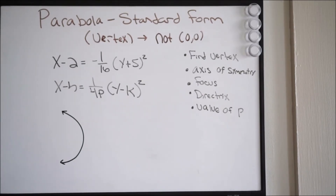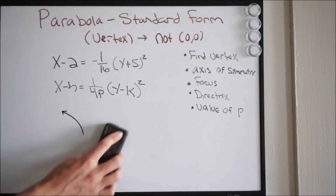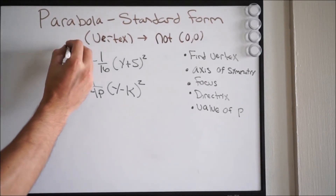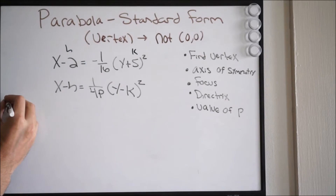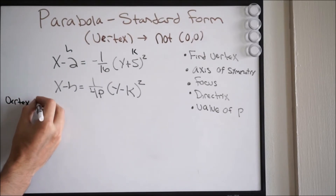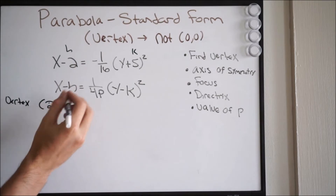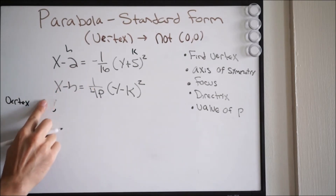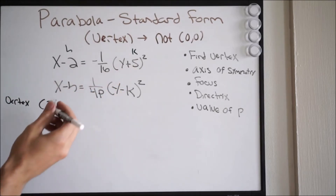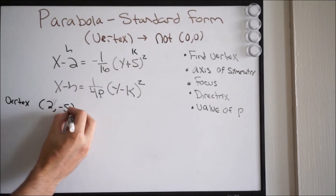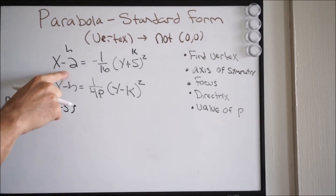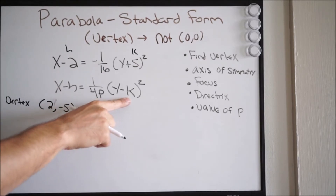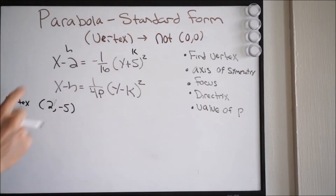Our first step is to find the vertex. This is fairly simple — it's going to be your h and k value. So h is going to be 2 and k is going to be negative 5. Think about it: if you take k = −5 and plug it in, two negatives make a positive, hence we have positive 5 in the equation. So your vertex here is going to be (2, −5).